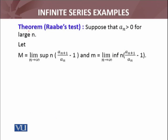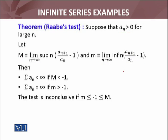We have another result which I am going to state only and apply to the next example. Suppose that a_n is greater than 0 for large n. Let M be the limit superior of n(a_{n+1}/a_n - 1), and small m defined as the limit inferior of that number. Then, what is the conclusion?